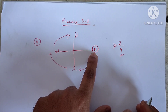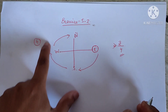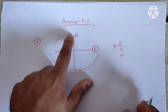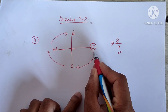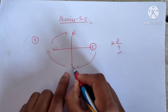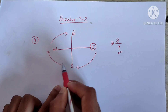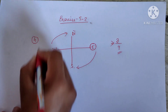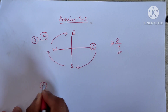Let me explain once more. We are standing in the east and turning clockwise to face north. Out of the total four directions, we are turning three times to reach north. That is why the answer is three by four.